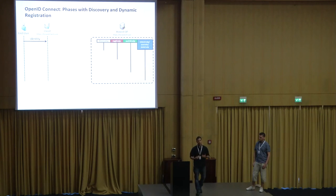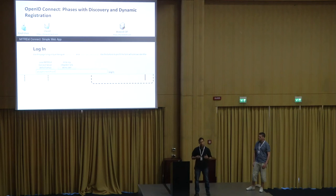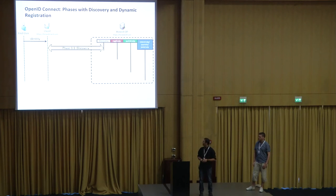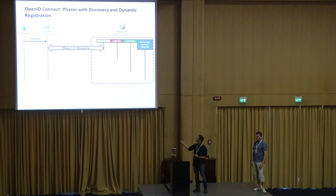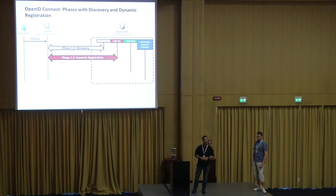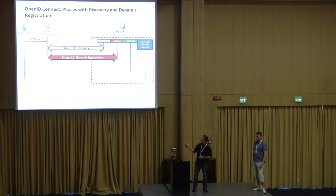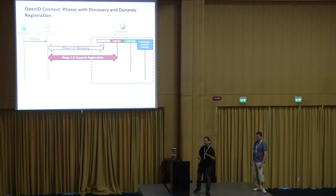If a user wants to authenticate on the client, he enters his identity — for example, Alice at honestop.com. Based on this identity or the domain honestop.com, a discovery is started. Basically, the client does not know anything about this honest OP and tries to find out further information. This is done in the discovery phase. In the second phase, dynamic registration takes place — the same as in manual registration, we exchange redirect URI and receive client ID and client secret. Please note this is a direct communication between the client and the honest OP; the end user does not know anything about these steps.